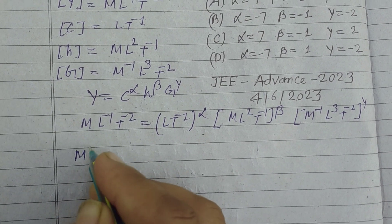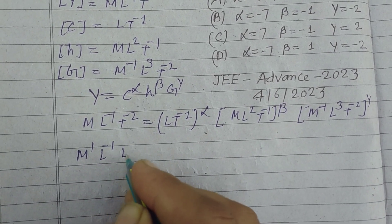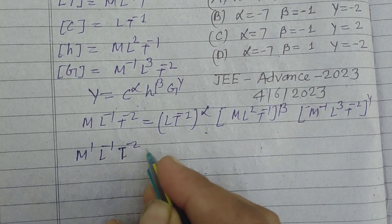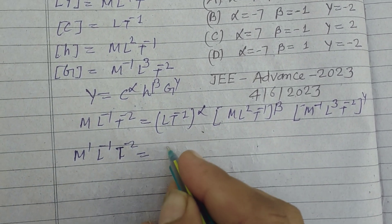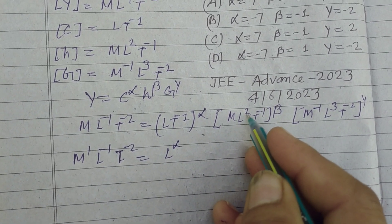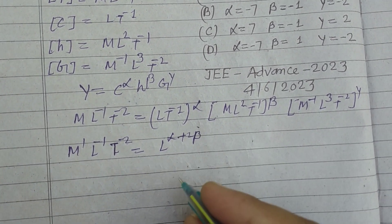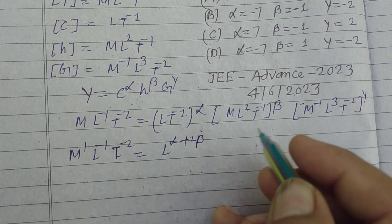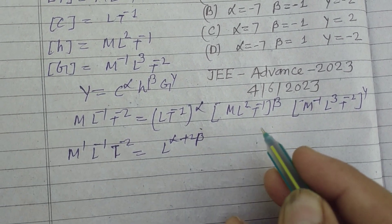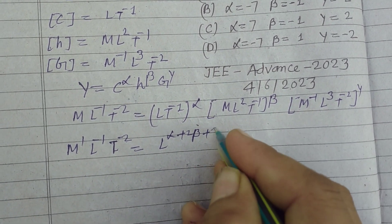Expanding the left side: M¹ L⁻¹ T⁻². On the right side, powers are added on multiplication, giving: M to the power (beta minus gamma), L to the power (alpha plus 2 beta plus 3 gamma).